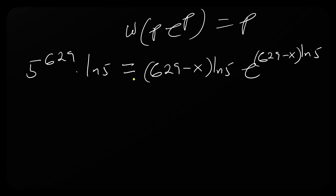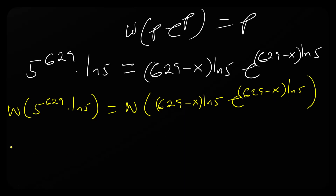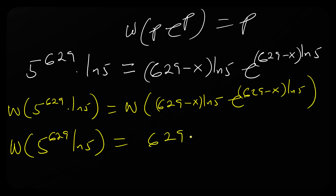From here we can take the Lambert W function since our goal has been achieved. Applying W to both sides: W of 5^629 times ln 5 equals W of [(629 minus x) ln 5 times e^((629 minus x) ln 5)], which simplifies the right side to (629 minus x) ln 5.